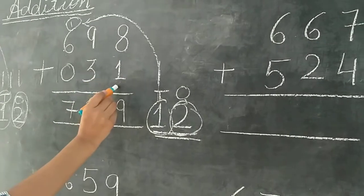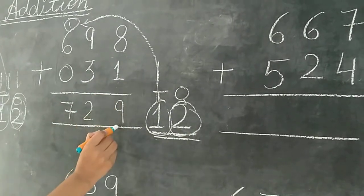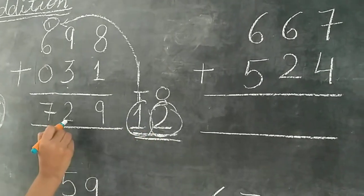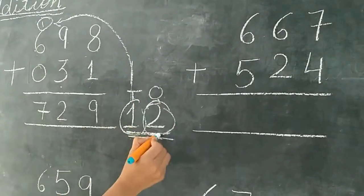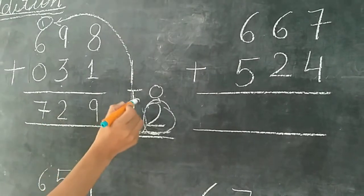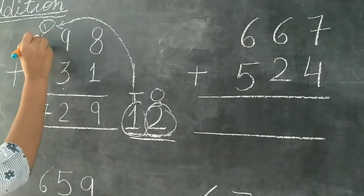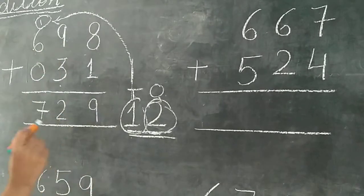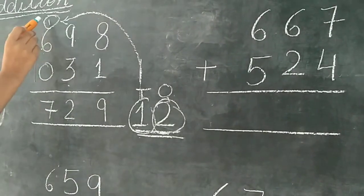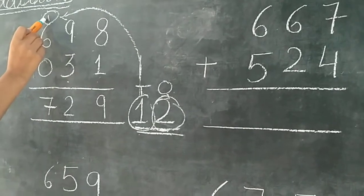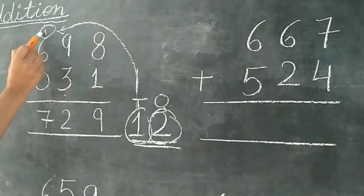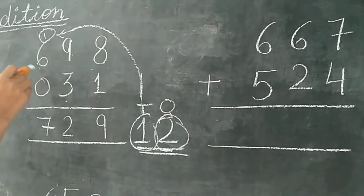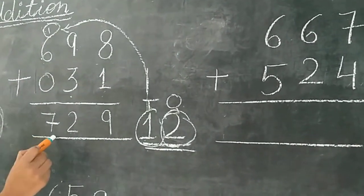8 mein humne 1 plus kiya, to aagya 9. 9 mein humne 3 plus kiya, to 12 aagya. But hum 12 ek saath yahan nahi likh sakte. Hum only 1s wale digit yahan likhenge, aur 10s hamaari carry. Sabse pehle aapko carry count karna hai, otherwise aap bhool sakte hain. 1 mein 6 add kiya, aagya 7. So the answer is 729.